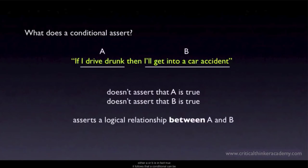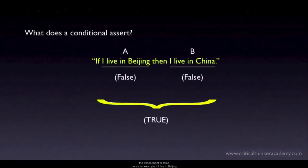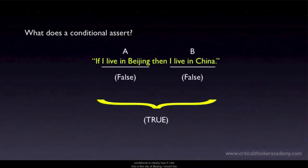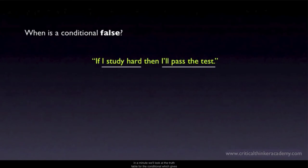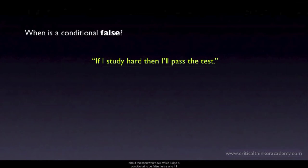It follows that a conditional can be true even when both the antecedent and the consequent are false. Here's an example: if I live in Beijing, then I live in China. I don't live in Beijing, and I don't live in China, so both the antecedent and the consequent are false. Yet this conditional is clearly true — if I did live in the city of Beijing, I would live in China. We'll look at the truth table for the conditional, which gives the truth value of the conditional for every possible combination of truth values of A and B.